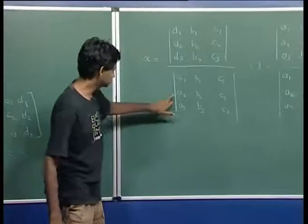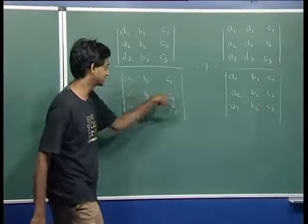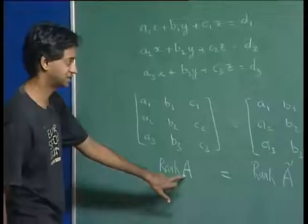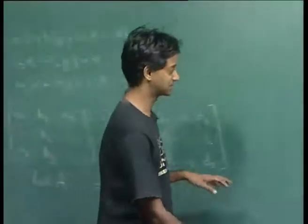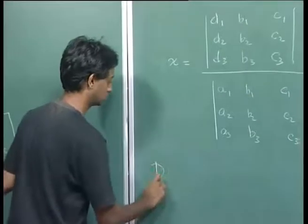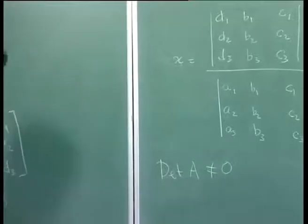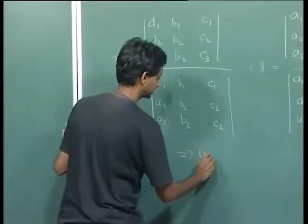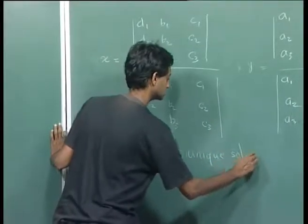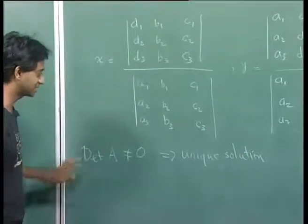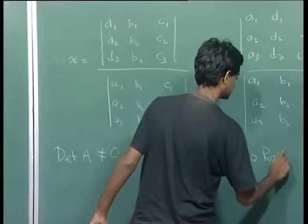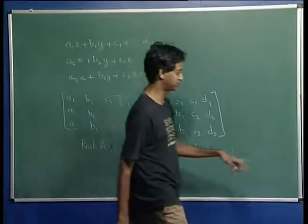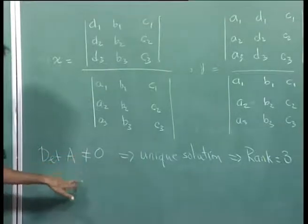The determinant that appears in the denominator is the same and is essentially the determinant of A. This determinant cannot be 0 because it appears in the denominator. So determinant of A not equal to 0 implies a unique solution, and this is also a way to check the rank of the matrix. If the determinant of A is not equal to 0, then the rank equals 3, and vice versa.